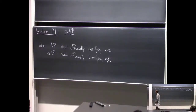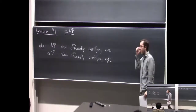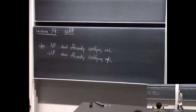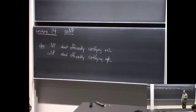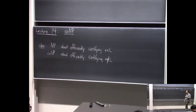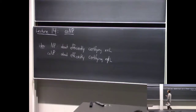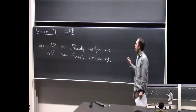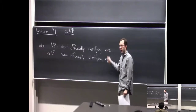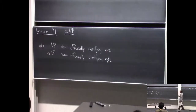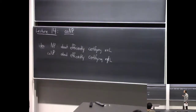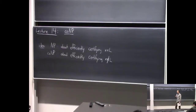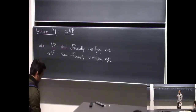The high-level idea of co-NP is this: NP is all about the ability to efficiently certify when a string is in the language. There's some proof system such that a polynomial-time verifier can become convinced when a string is in the language. And co-NP is going to be sort of the opposite—it's about all the languages L where you can efficiently become convinced that a string is not in the language.